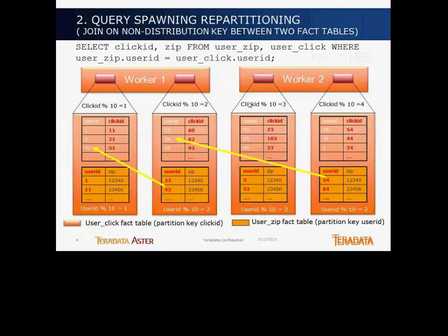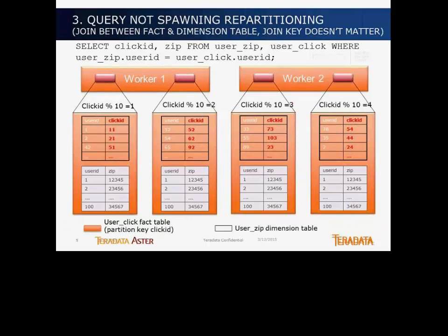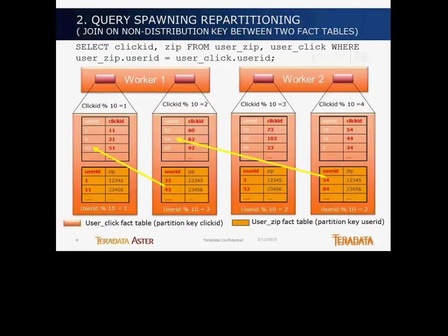So this is the second type we looked at. Think of it this way: even when you do a GROUP BY that does not have a distribution key, the repartitioning happens in a similar fashion. We talked about a join between two fact tables joined by the distribution key on both — that's local. And in the second case, a join between two fact tables where the join key is the distribution key for one but not the other, which involves repartitioning.